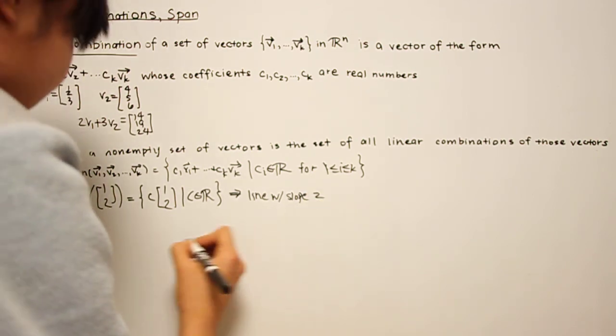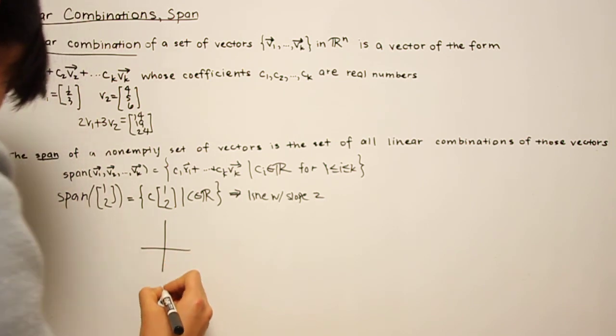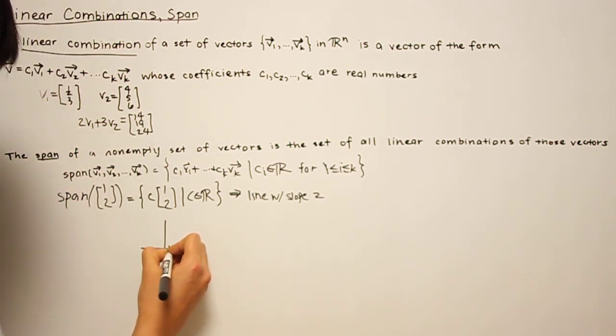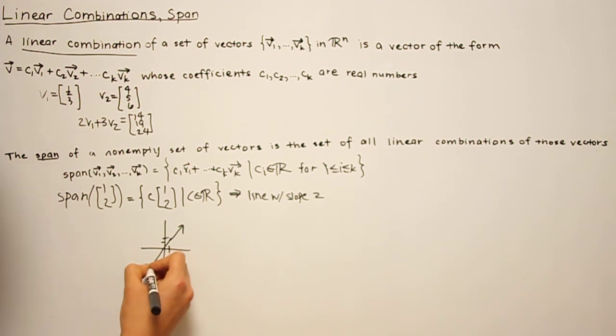And geometrically, you can think of this as just a line passing through the origin with slope 2.